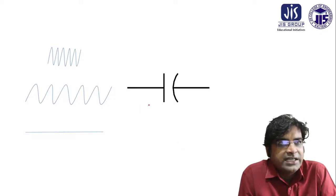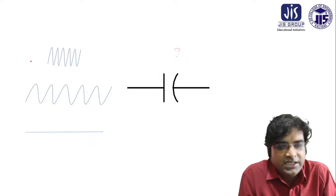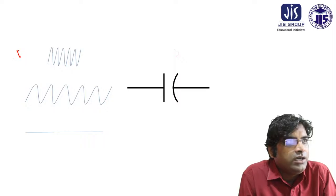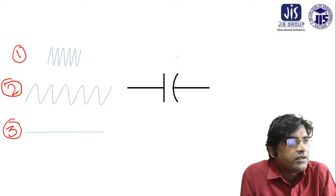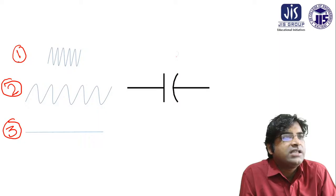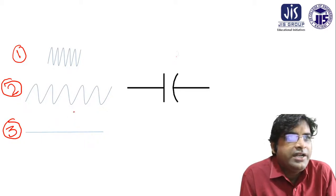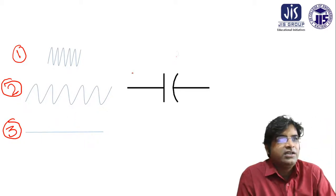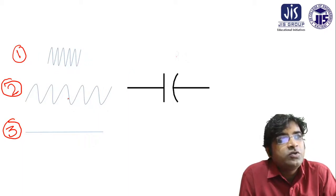There is a capacitance, and in the case of this capacitance I am giving you three signals. This is signal one, this is signal two, and this is signal three. So signal one, signal two, and signal three.